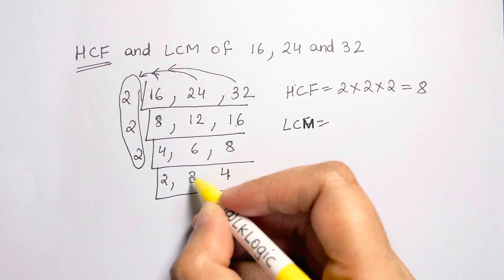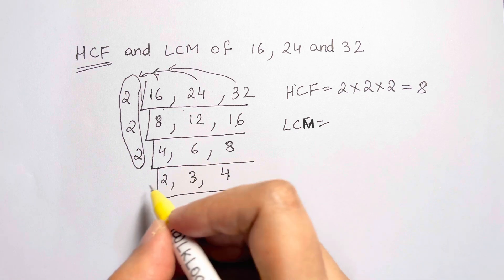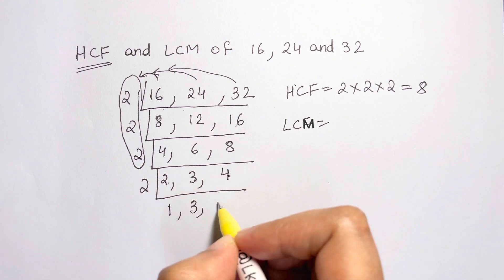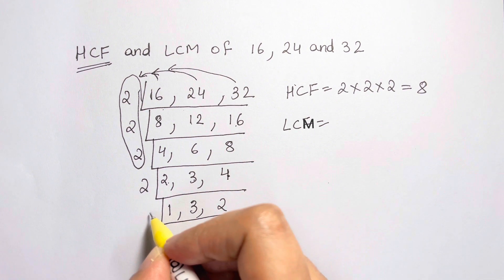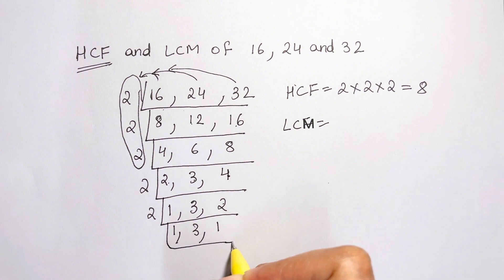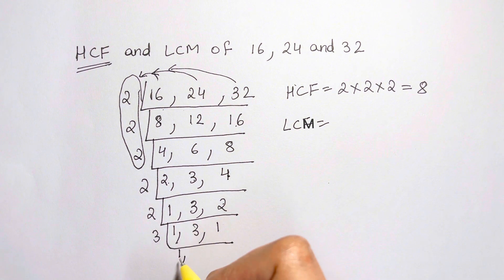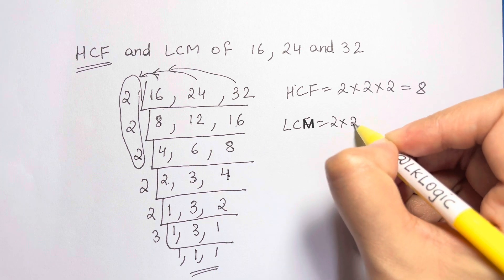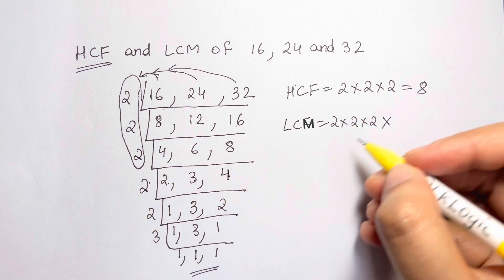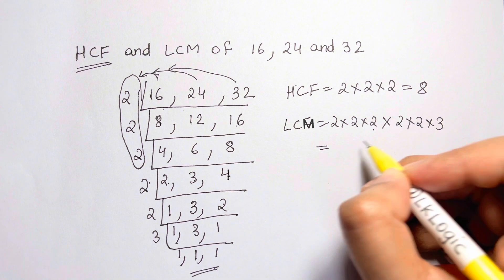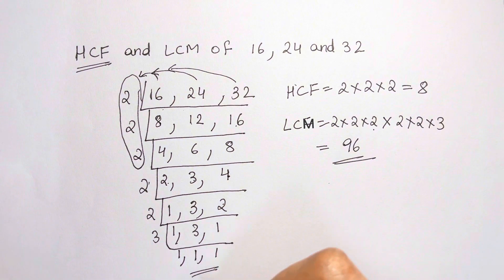For LCM, continue the ladder until all remainders reach 1. Starting from 2, 3, and 4: take 2 — divide 2 and 4 by 2, carry 3 as is: results are 1, 3, 2. Take 2 again — carry 1 and 3, divide 2: results are 1, 3, 1. Take 3: 3 ÷ 3 = 1. Now all are 1, so stop. LCM = 2 × 2 × 2 × 2 × 2 × 3 = 96.